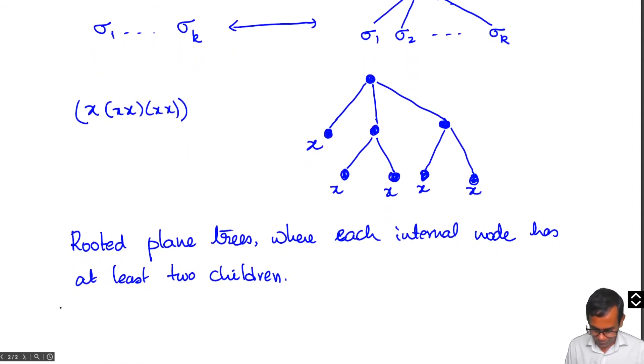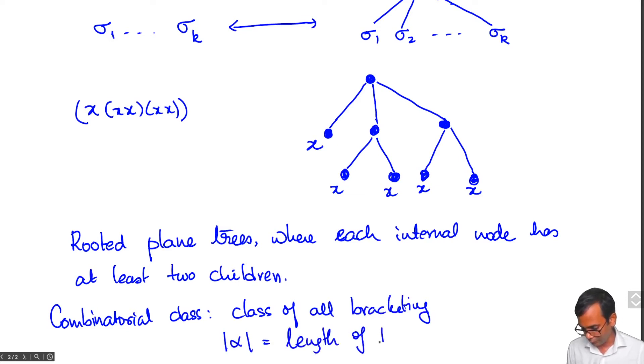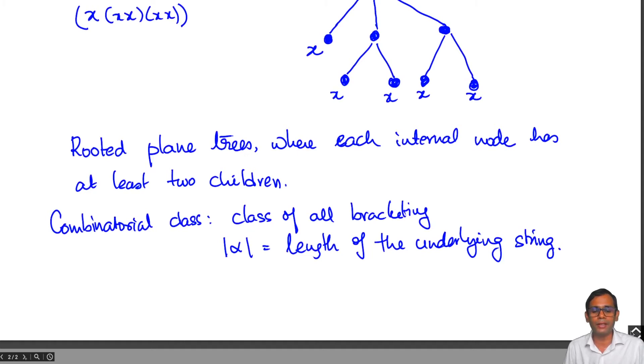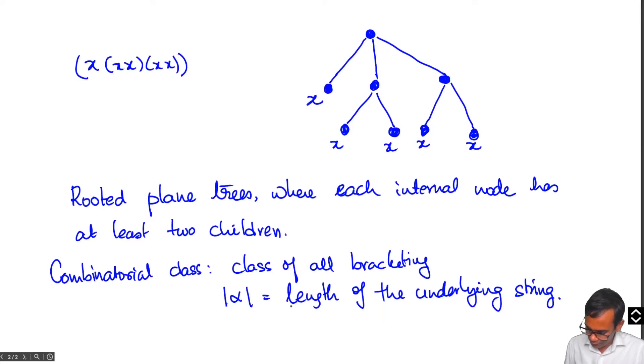And so now we can define the combinatorial class. The class of all bracketings, and the size of alpha is the length of the underlying string. This size function is a bit different from the class of plane trees. In the plane tree model this alpha is the number of leaves, so the internal nodes do not count towards the size.